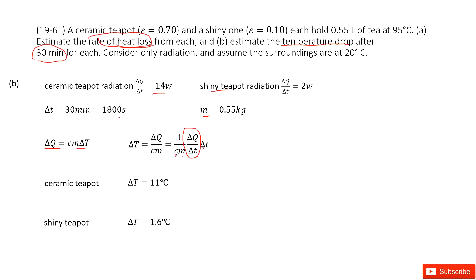Now we input all quantities for the ceramic teapot: 1 over cm, times the rate (14 watts), times Δt (1800 seconds), giving us the answer. Similarly, we calculate for the shiny teapot.